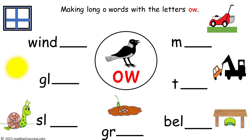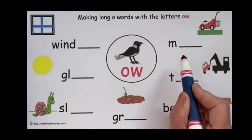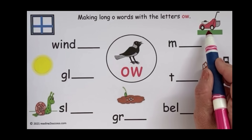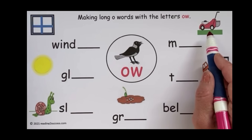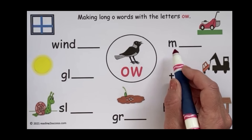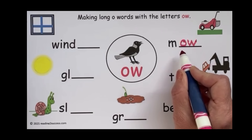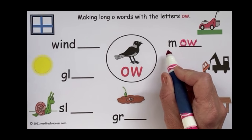This is a template for the first student practice page and the first teaching demonstration. Now we're going to have kids make long O words with the letters O-W, like in Crow. Let's look at our first picture — it is mow. They are going to mow the lawn. We already have the M, and now we're going to add the O-W that makes O. We have mow.